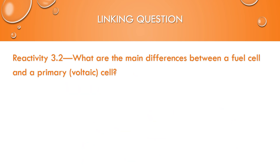This links to reactivity 3.2, which covers electrochemical cells. The key difference between a fuel cell and a primary or voltaic (galvanic) cell is that a fuel cell, as long as you're providing enough fuel, will just keep going — whereas a primary or voltaic cell will eventually run out of materials, whether it's in an enclosed battery or an open setup with two beakers and a salt bridge. A similarity between them is that both produce energy, which distinguishes them from electrolytic cells, which require an input of energy.